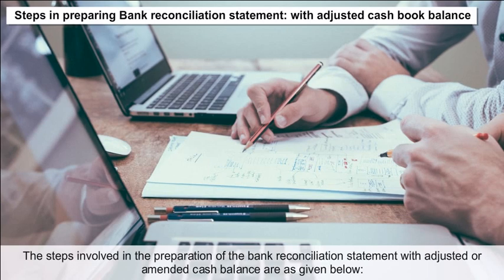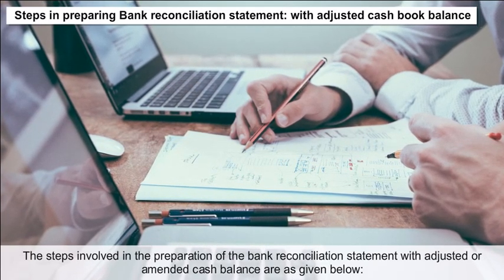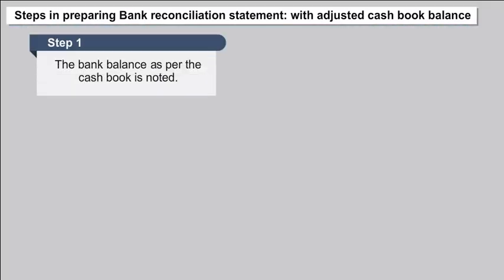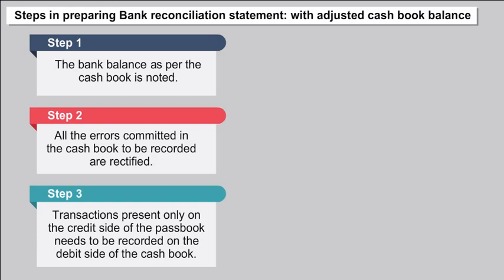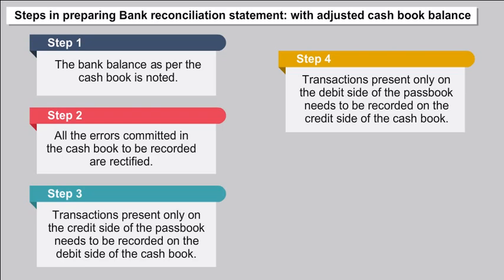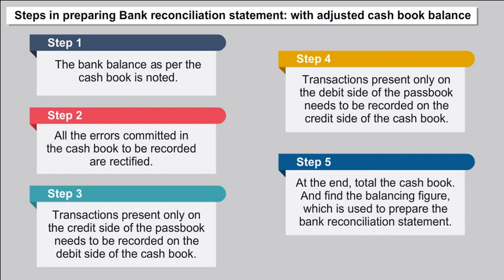Steps in preparing BRS with adjusted cash book balance: Step 1 — Note the bank balance as per the cash book. Step 2 — Rectify all errors committed in the cash book. Step 3 — Transactions present only on the credit side of the pass book need to be recorded on the debit side of the cash book. Step 4 — Transactions present only on the debit side of the pass book need to be recorded on the credit side of the cash book. Step 5 — Total the cash book and find the balancing figure, which is then used to prepare the bank reconciliation statement.